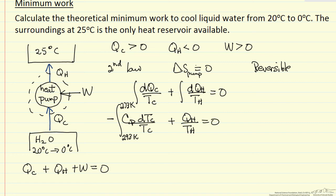And so what we can do is integrate this, so minus the heat capacity times the log of Tc evaluated between our limits, plus QH over TH is equal to zero.